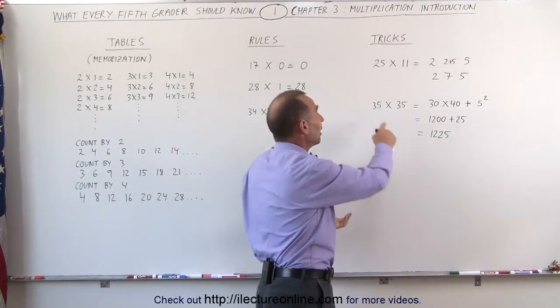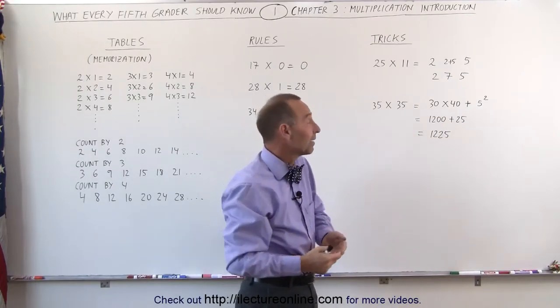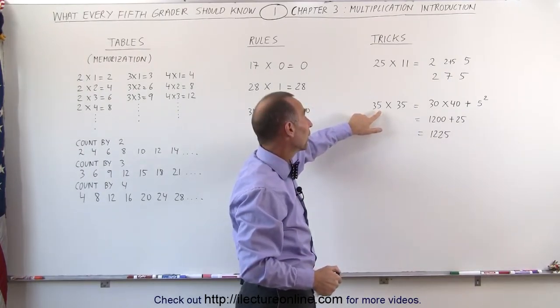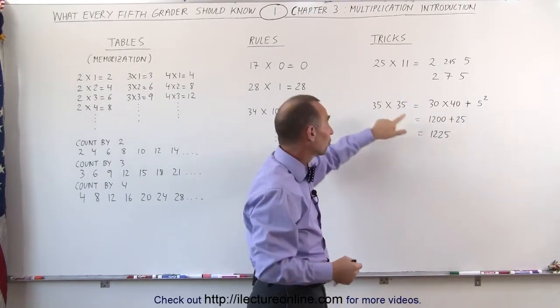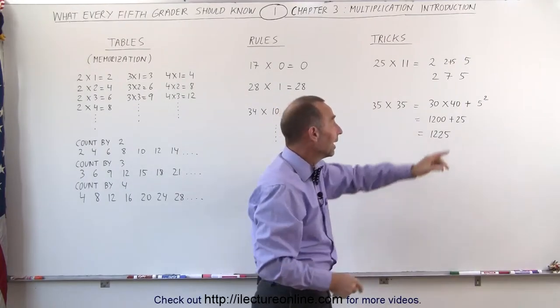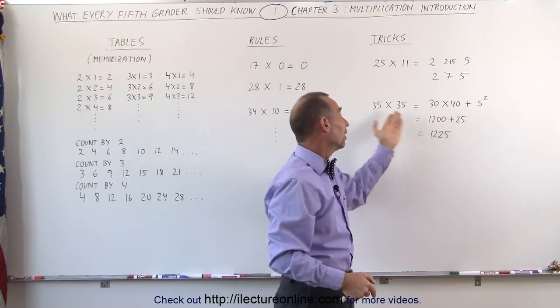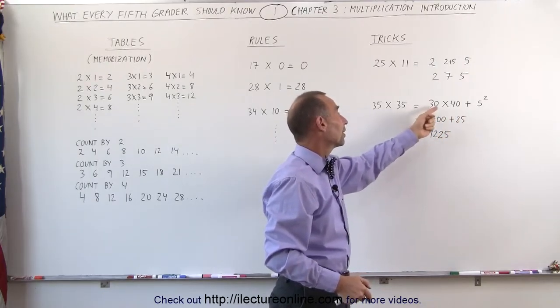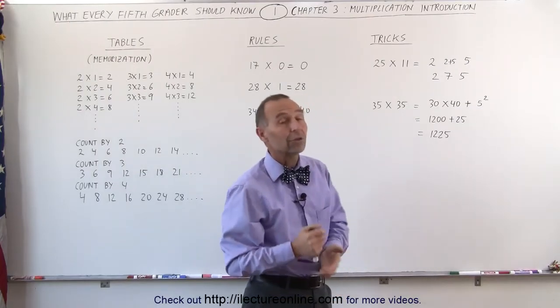Another trick is multiplying 35 times 35 or 45 times 45 and things like that. When you multiply 35 times 35, that is equal to 30 times 40. In other words, you subtract 5 from the number, you add 5 to the number, you multiply those together, and then you add 5 squared, which is 25. So ultimately, 35 times 35 is 30 times 40 plus 25, which is 1,225.